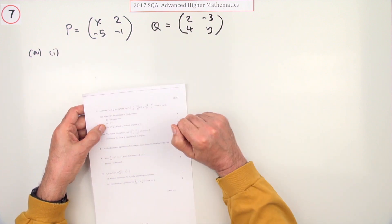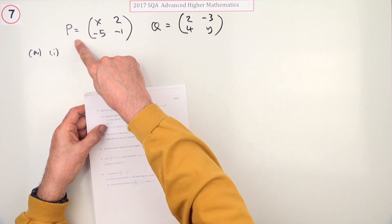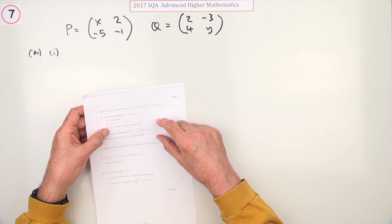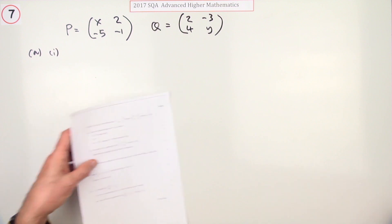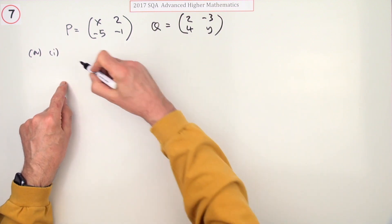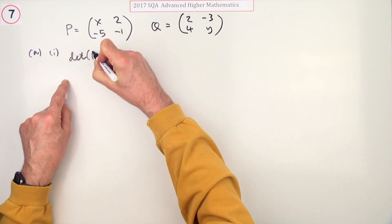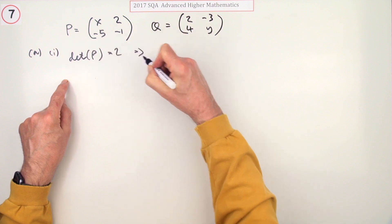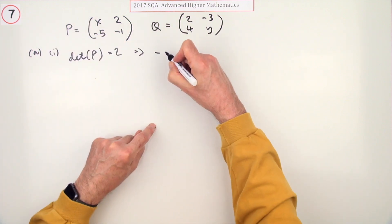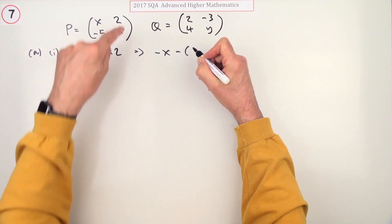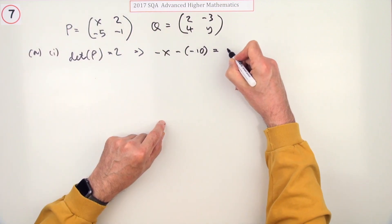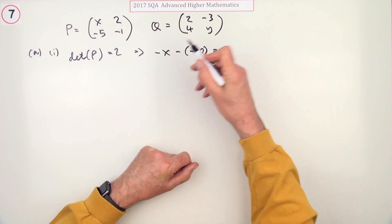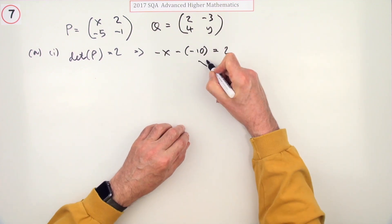Given this matrix, given that its determinant is two, what's the value of x? If the determinant of P is two, that means the product of the main diagonal, negative x, minus the product of the other diagonal, so that's minus negative 10, should equal two. Taking the x across, that's 10, so x is 8.